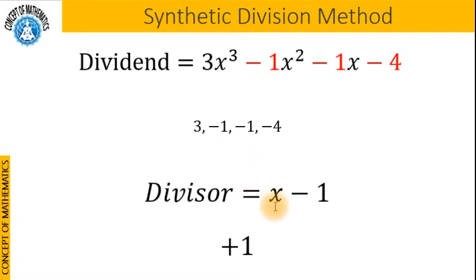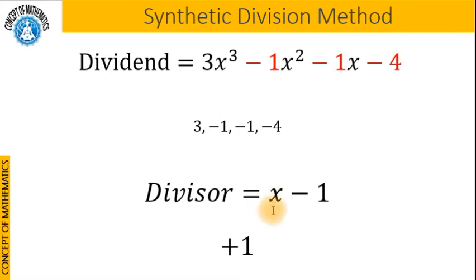Now we will drop the highest degree term of the divisor. In our case the divisor is x minus 1, and the highest degree term is x, so we will drop that term. Then we will negate the coefficient of the remaining terms. Our remaining term here is negative 1, so we will negate negative 1 and get positive 1.